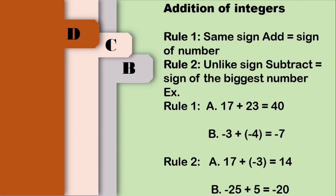Next, 17 plus negative 3. Alam natin na ang 17 is positive, so ibig sabihin nun pera mo yun, tapos may utang ka dun sa isang kantin ng 3 pesos. Kung babayaran mo yung utang mo na yun, ilan na lang pera mo? So that is positive 14. Yun lang siya kadali. I-repeat mo lang siya para magpagsagot ka minsan nang mag-add ng integers — isipin mo lang na parang nasa kantin ka.